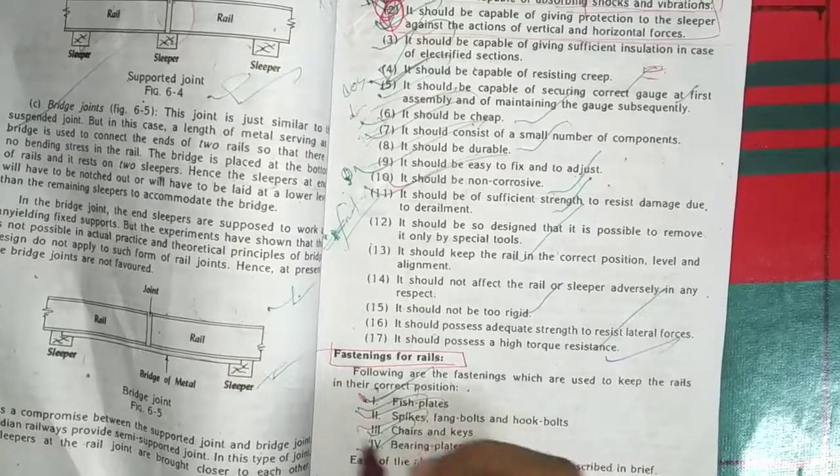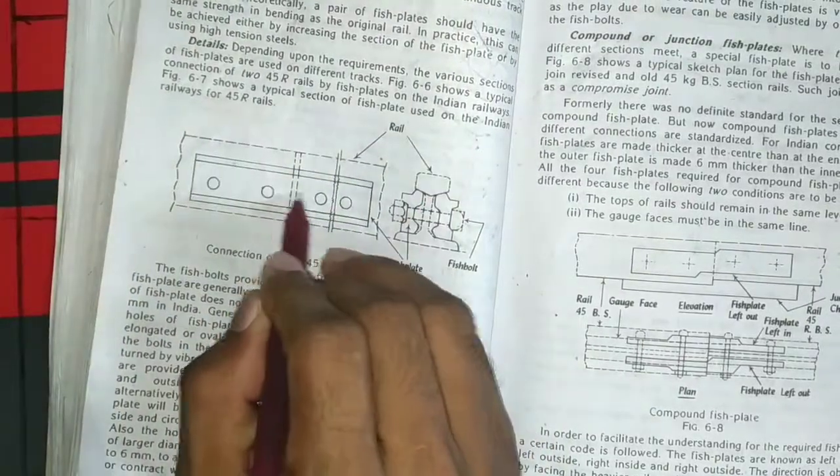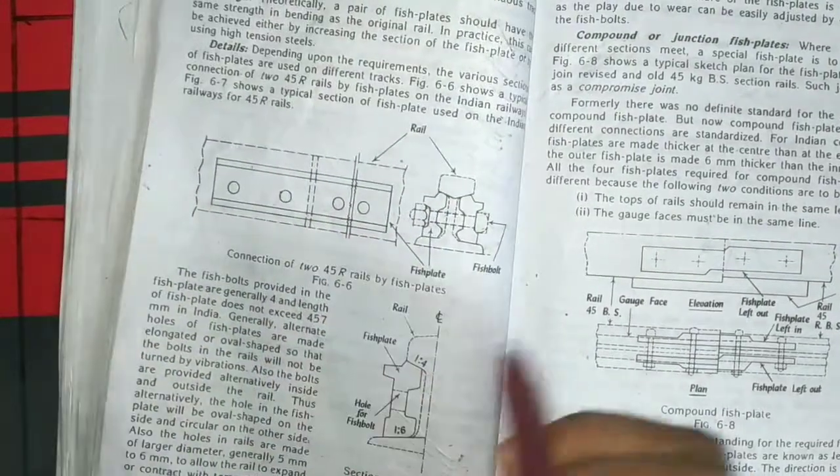This is a fish bolt, spike, and bearing plate. This is a fish bolt. This is a fish bolt, a bearing plate, and an anchor bolt. This one is a fish bolt and an anchor bolt.